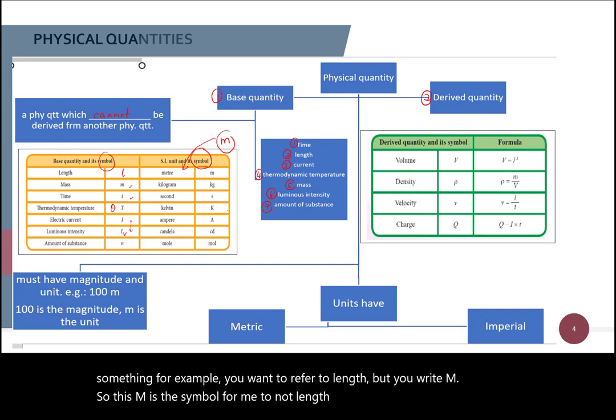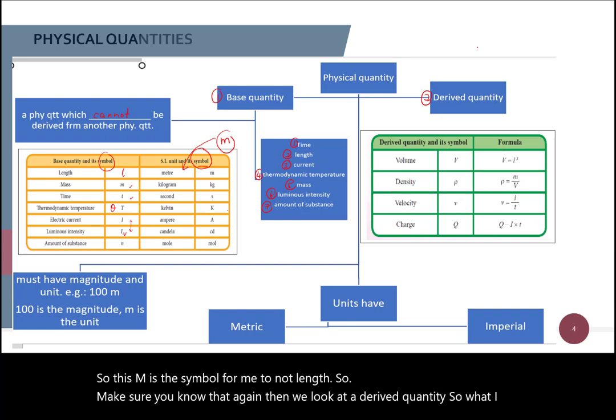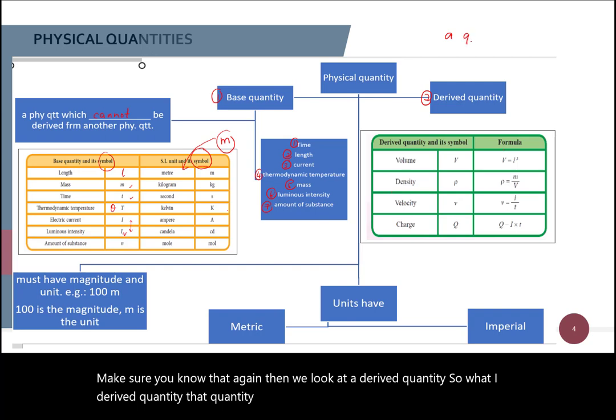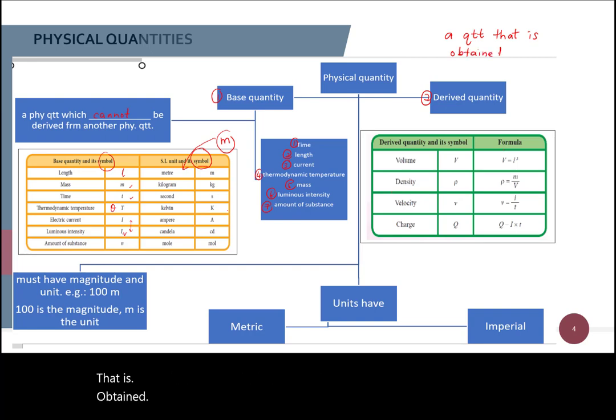Okay, and then we will look at the derived quantity. So what are the derived quantity? Derived quantity is a quantity that is obtained by multiplying or dividing two or more base quantities. Okay, so let's look at the example, we have four examples here.